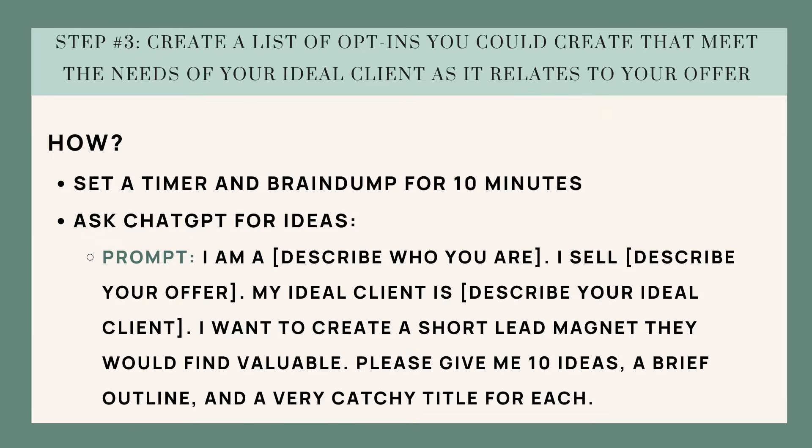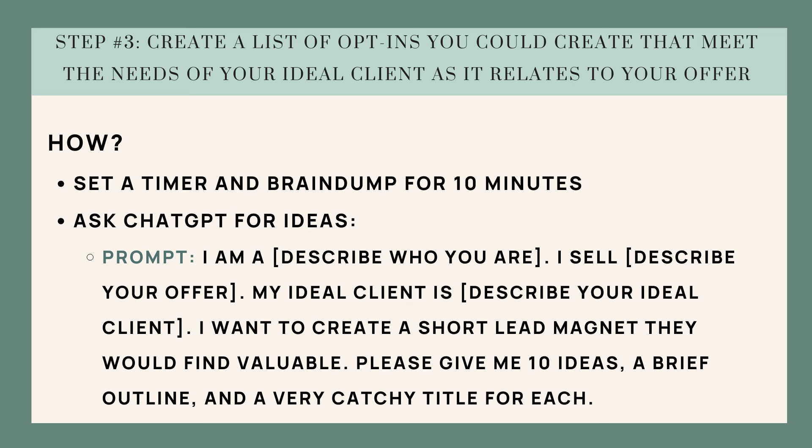Step number three: create a list of opt-ins you could create that meet the needs of your ideal client as it relates to your offer. I suggest setting a timer and brain-dumping for 10 minutes. My team used Asana tasks to each generate five to ten ideas, then brought them together in Notion to prioritize. If you don't have a team, ask ChatGPT using this prompt: 'I am [describe yourself]. I sell [describe the offer]. My ideal client is [describe them]. I want to create a short lead magnet they would find valuable. Please give me 10 ideas, a brief outline, and a catchy title for each.'